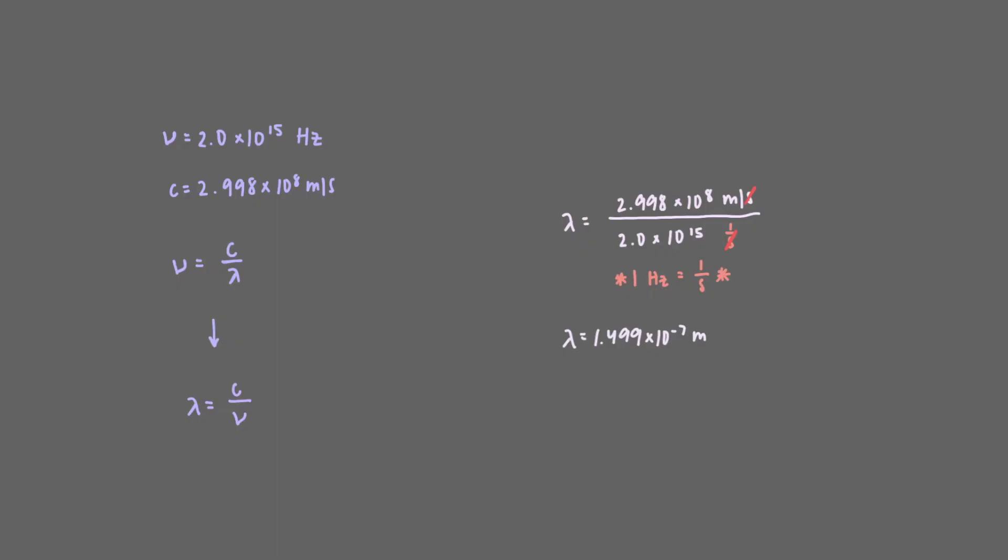We want our final answer to be in units of nanometers, so we need to convert the answer we got into nanometers. We can do this by setting up a dimensional analysis problem. 1 meter is equivalent to 10 to the 9th nanometer. Our units of meter will cancel out and we'll be left with our final answer.